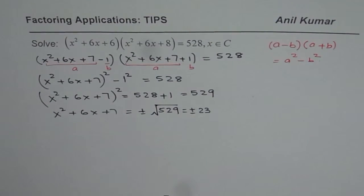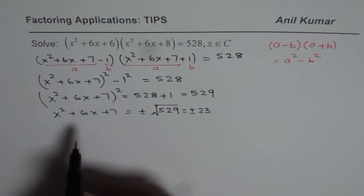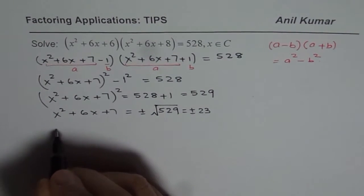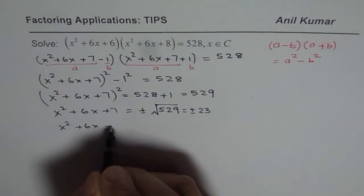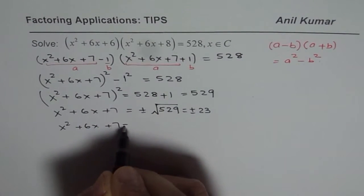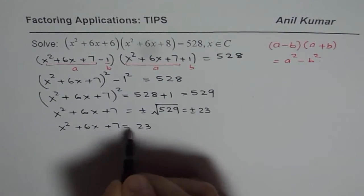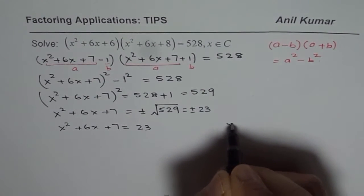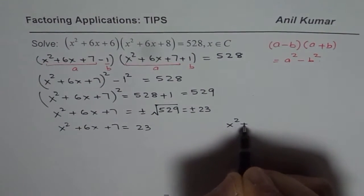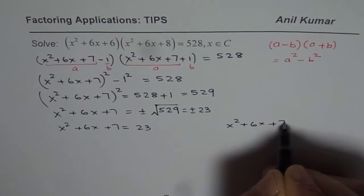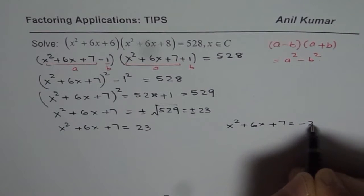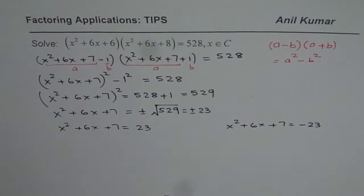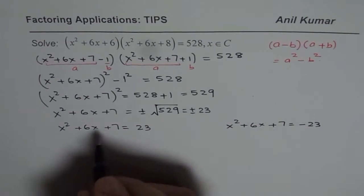So we can write this as plus or minus 23, giving us two equations. One is x squared plus 6x plus 7 equals 23, and the other is x squared plus 6x plus 7 equals minus 23. These are quadratic equations and we can now solve them to find x.